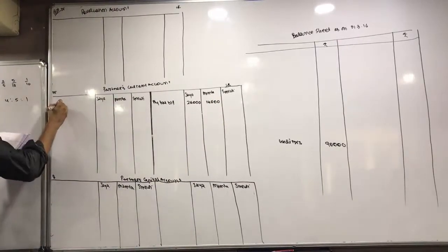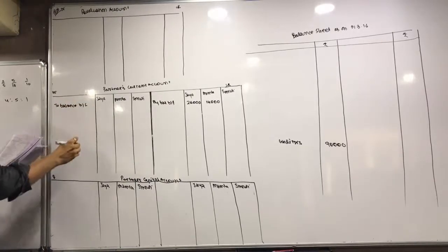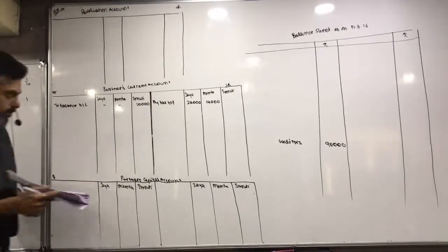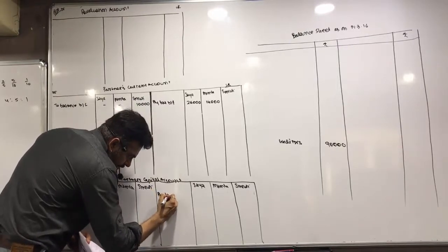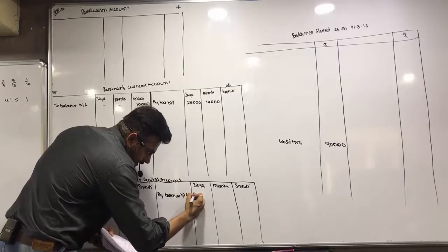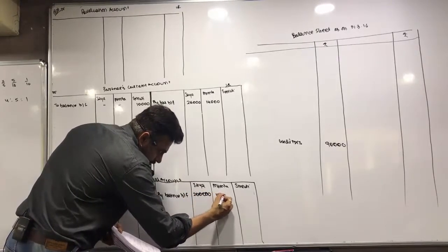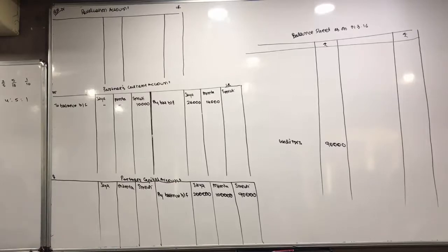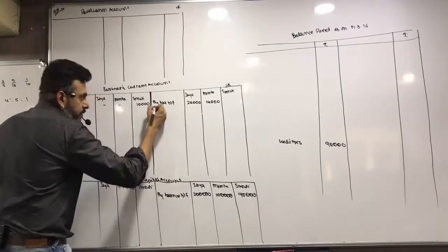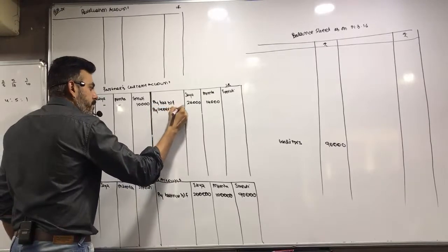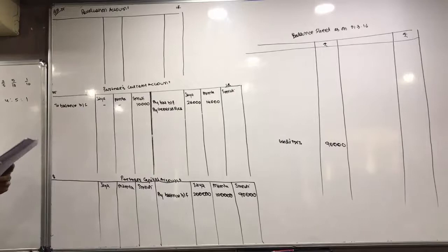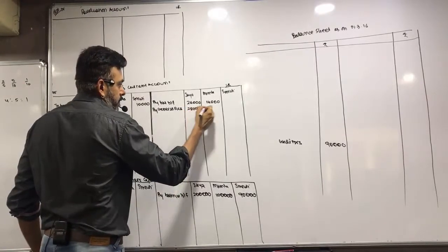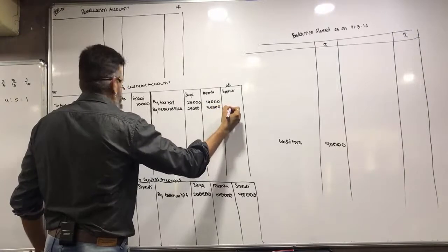Current account debit balance brought forward: 10,000. Capital account by balance brought forward: 2 lakh, 1 lakh, and 90,000. By general reserve: amount is 70,000, distributed as 28,000, 35,000, and 7,000.